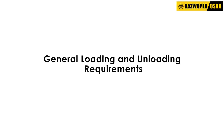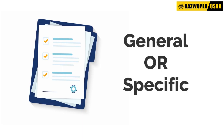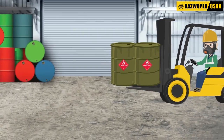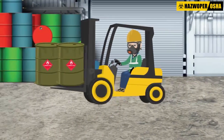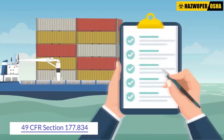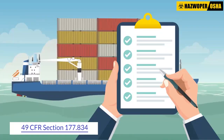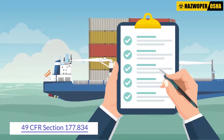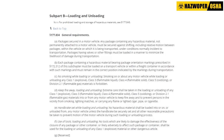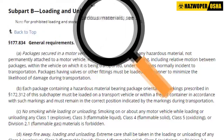General Loading and Unloading Requirements. The Hazardous Materials Regulations set forth general and specific loading and unloading requirements to ensure safe transportation of hazardous materials and to minimize the likelihood of an accident or other emergency during transit. The general loading and unloading requirements for hazardous material shipments are specified in 49 CFR Section 177.834. Let us learn about these requirements in detail.